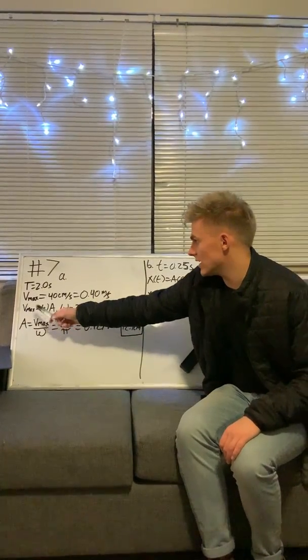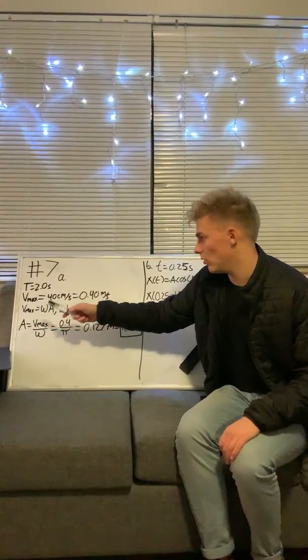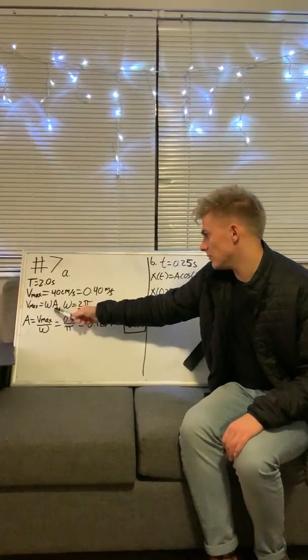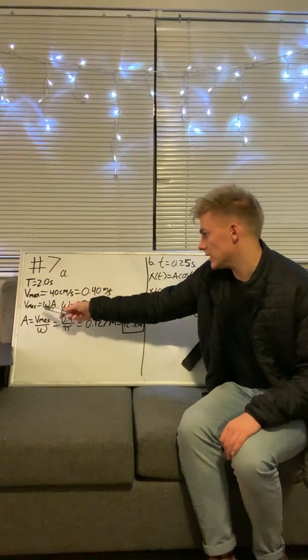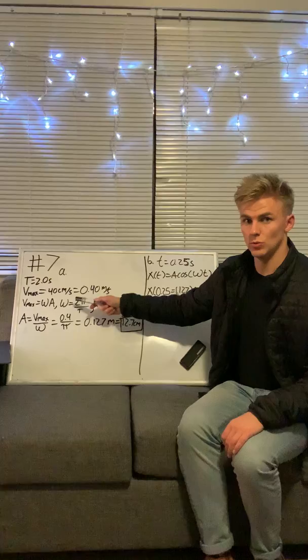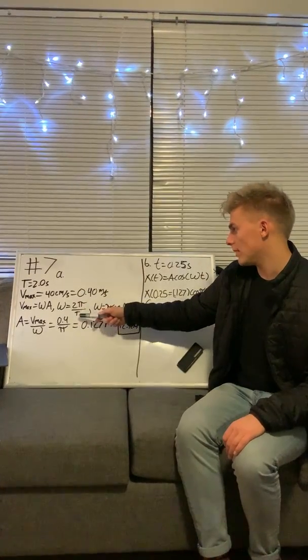We can use an equation that says V max equals our rotational velocity times our amplitude, or omega times amplitude. We also know that omega equals 2π over our period.